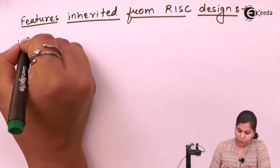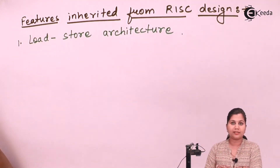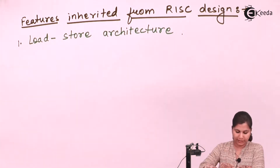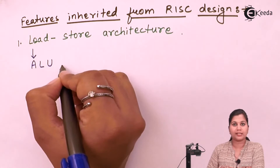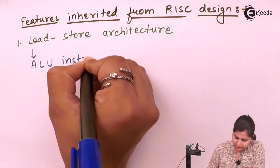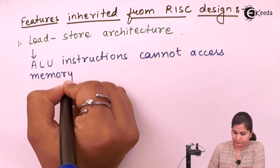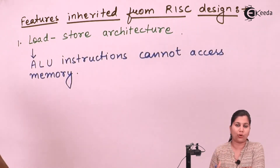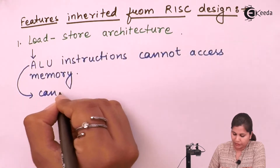The first feature is the load-store architecture. The ARM processors, just like RISC processors, have the feature of load-store architecture. By load-store architecture we mean that the ALU instructions — that is, arithmetic and logical instructions — in the processor are not going to access the memory. So ALU instructions cannot access memory; we cannot perform arithmetic and logical operations like addition, subtraction, logical AND, logical OR directly on memory.